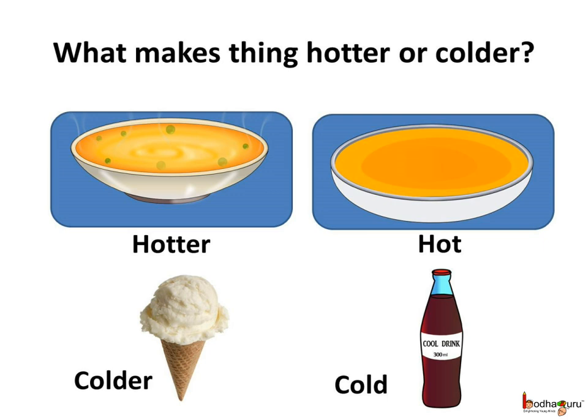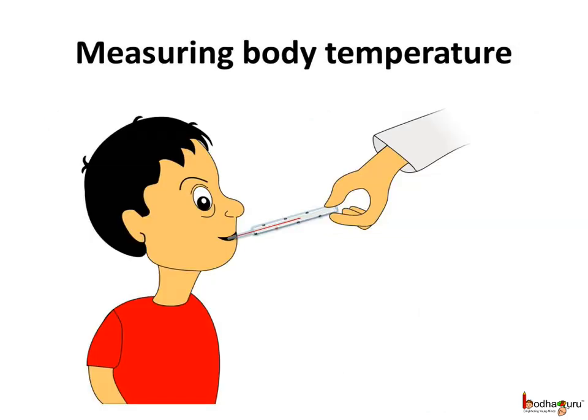So what makes things hotter or colder? When you get fever, your body becomes hotter than normal. To know how hot your body has become, your mother puts a thermometer in your mouth or under the arms.